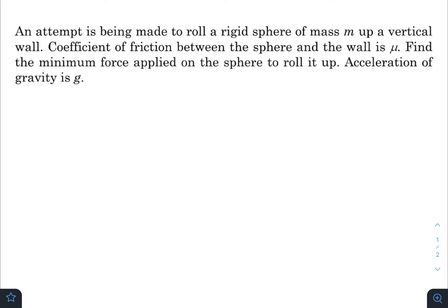Hey, what's up everyone! I hope all of you are doing great. In today's question, an attempt is being made to roll a rigid sphere of mass m up a vertical wall. Coefficient of friction between the sphere and the wall is μ. Find the minimum force applied on the sphere to roll it up. Acceleration of gravity is g. I like this type of short questions rather than those large, huge, bulky paragraph types.